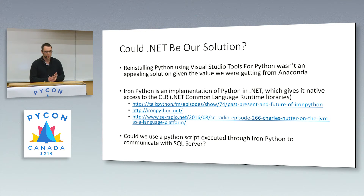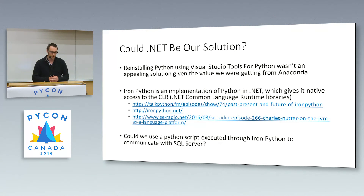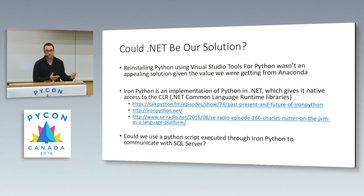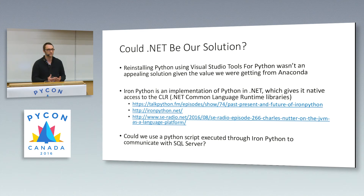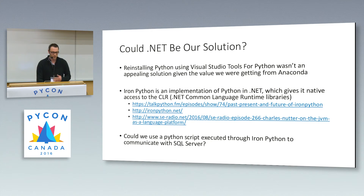So we turned to IronPython to explore whether it could work for us. I'd heard about it on the Talk Python podcast — an implementation of Python written in .NET. The key thing IronPython gives you is native access to the CLR, the .NET Common Language Runtime, which gives you native access to the entire Windows API. From that library alone, you can access mostly everything available in the traditional .NET ecosystem — C#, F#, and VBA. We wanted to see if we could write a Python script in IronPython to handle our communication to SQL Server.